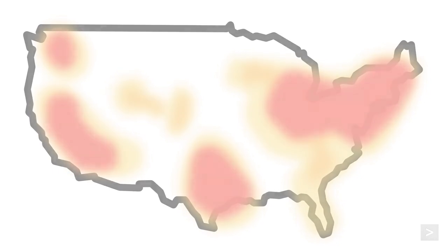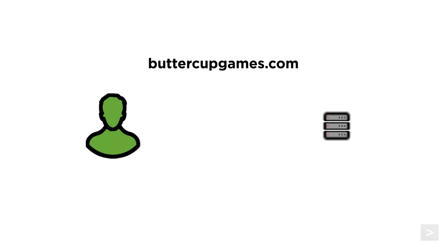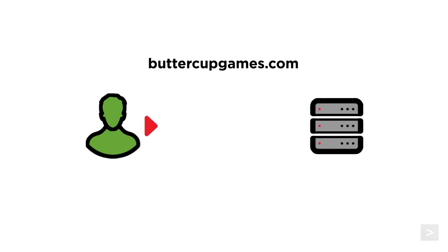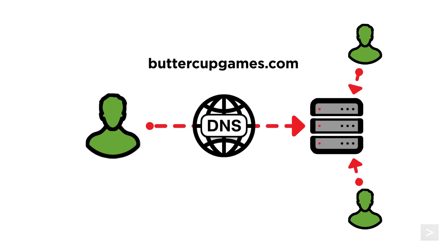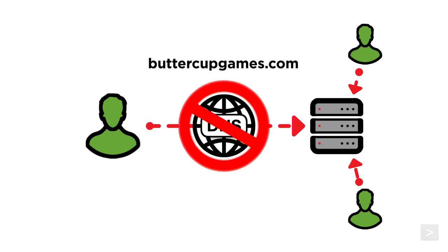Why attack a DNS provider? Whenever you type a URL into your browser to visit a website, your computer sends a domain name resolution request to translate that URL into an actual IP address. If your DNS is unable to return that IP address to you — as happened during the attack — then you cannot reach that website, even if it's actually up and running.